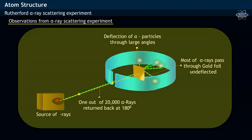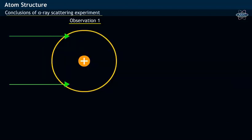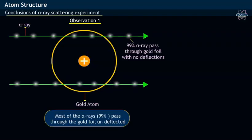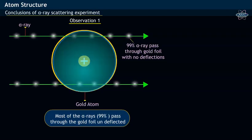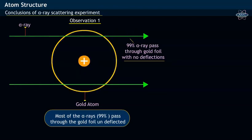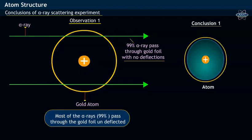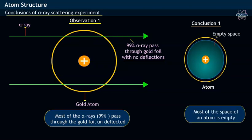From the observations noted from alpha ray scattering experiment, Rutherford drew the following conclusions. From the first observation that 99% of alpha rays pass through the gold foil undeflected, Rutherford concluded that most of the space of an atom is empty.